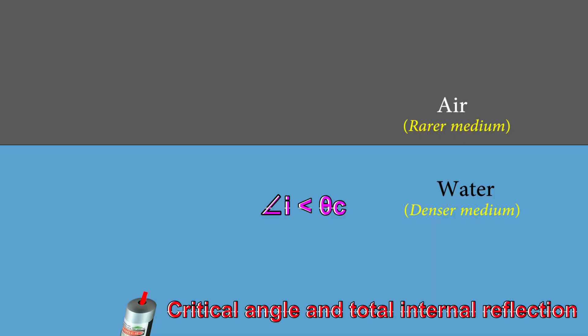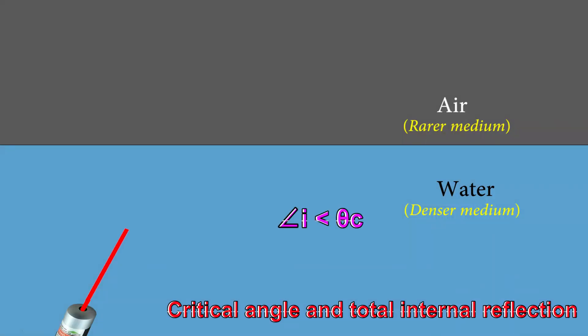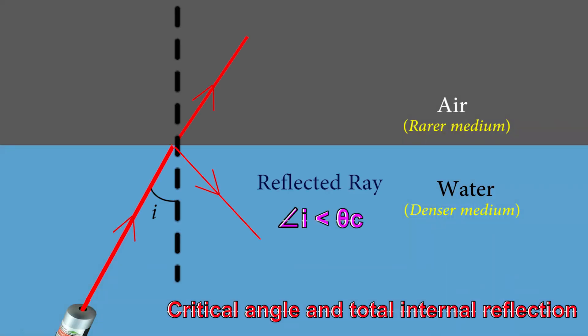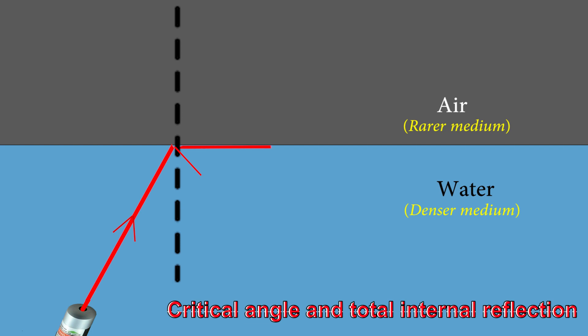When these two conditions are met, the light will not pass through the boundary, but will be reflected back inside the denser medium. Total internal reflection is a crucial principle used in various optical applications, such as fiber optics and prismatic effects in gems like diamonds, which create beautiful sparkles.